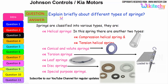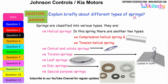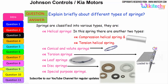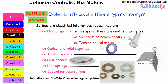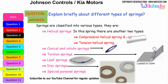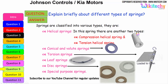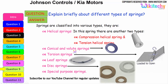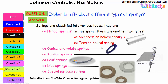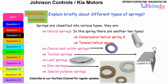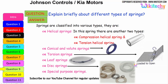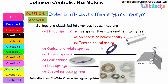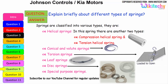Let us briefly see the different types of springs. Springs are classified into various types: helical springs, which are further divided into compression helical springs and tension helical springs; conical and volute springs; torsion springs; leaf springs; disk springs; and special purpose springs. These are all the different types of springs available.